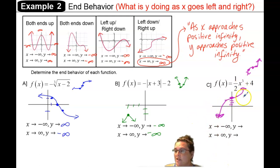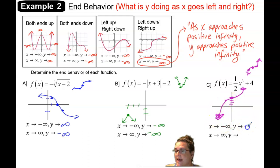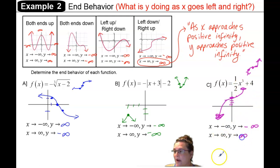That gives us a rough sketch of our cubic function. For its end behavior: as x approaches negative infinity, the left end is headed down to negative infinity. As x approaches positive infinity on the right, the y is heading up to positive infinity.